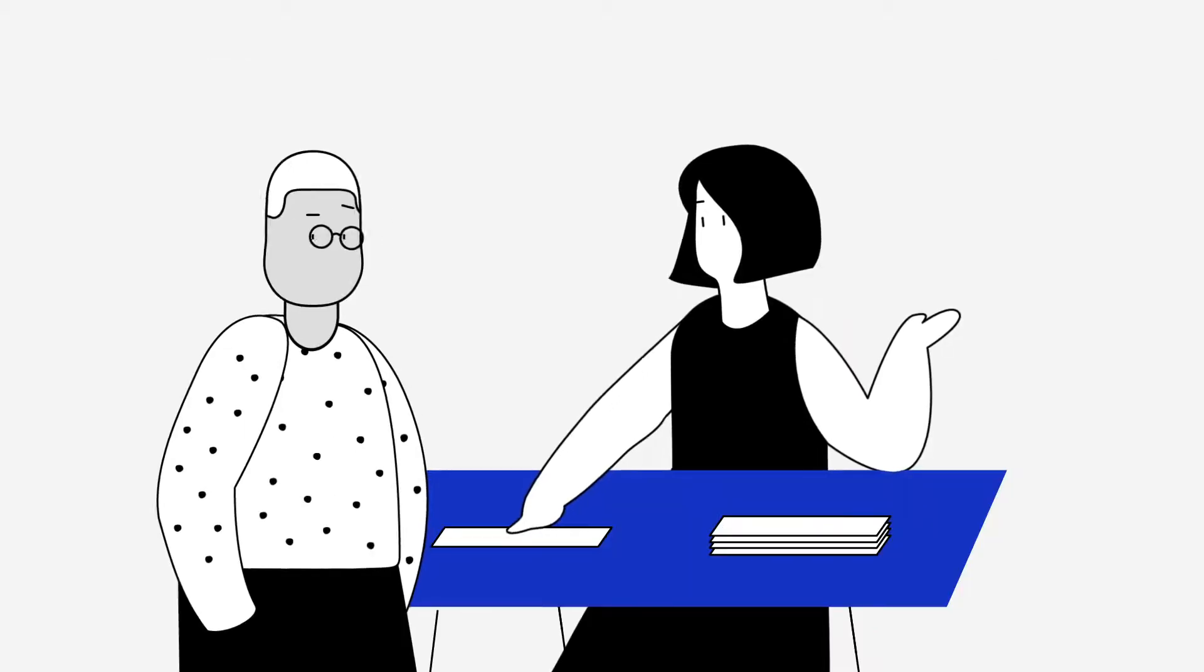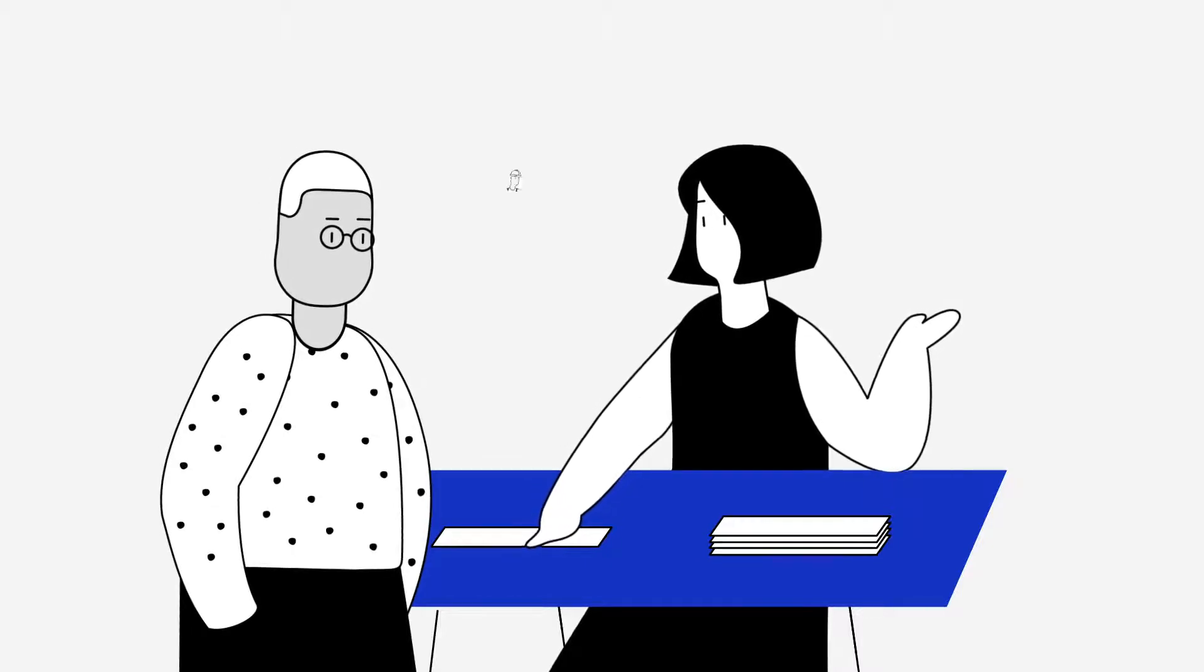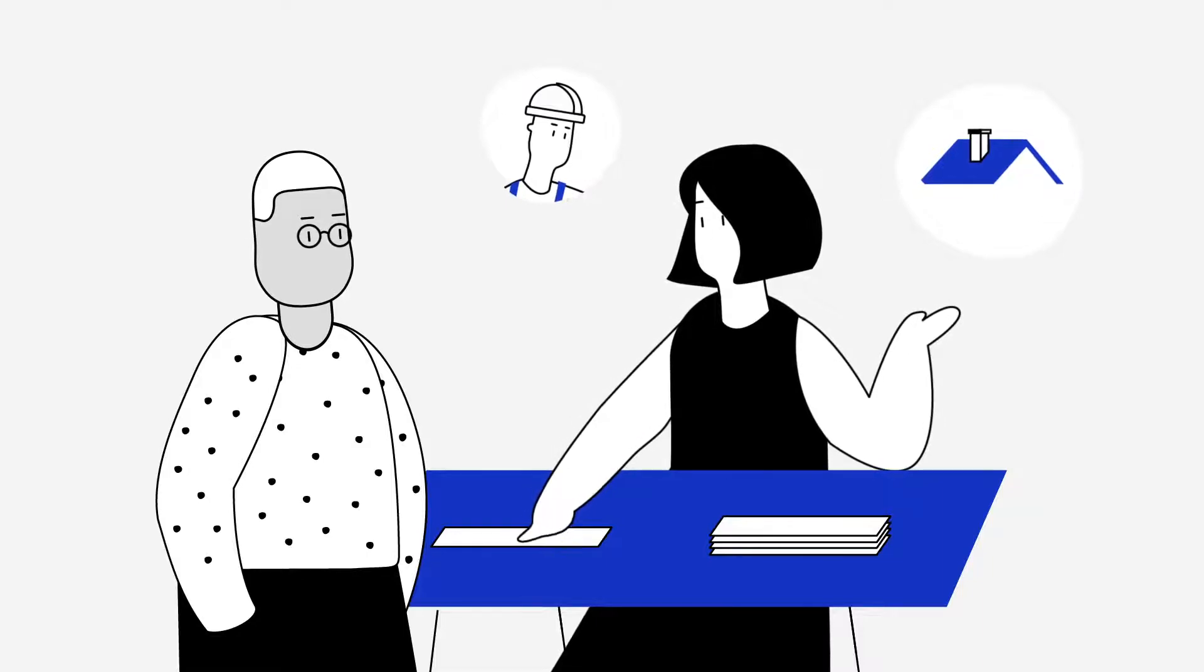If there's one thing Louis doesn't have, it's organizational skills. Good thing, Julie will plan the work, select the artisans, manage site monitoring and all procedures.